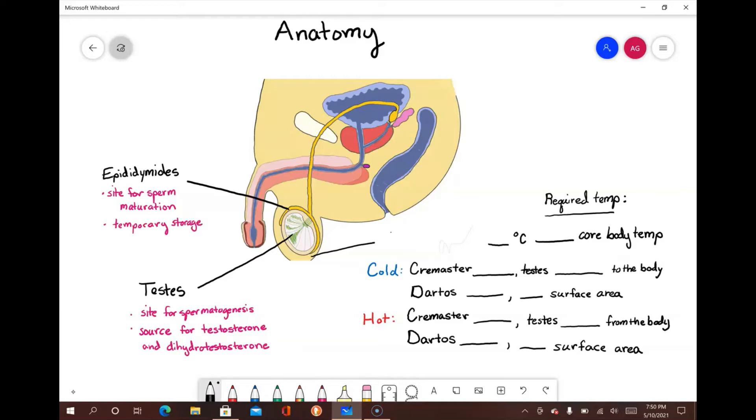The scrotum houses the testes and is responsible for protecting and regulating the temperature, something so vital to the proper development of sperm. Sperm require a temperature of 3 degrees Celsius less than the core body temperature in order to properly develop.